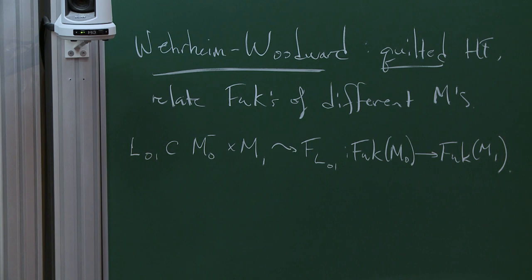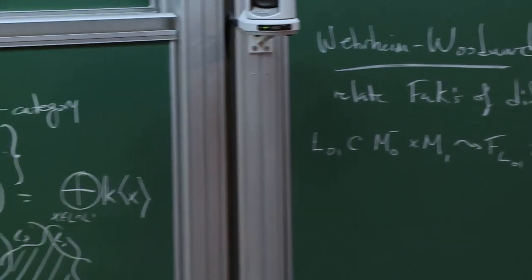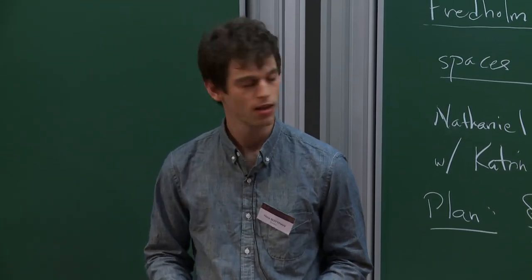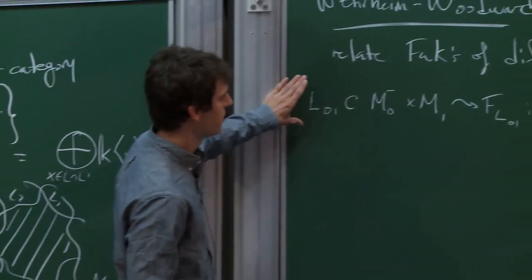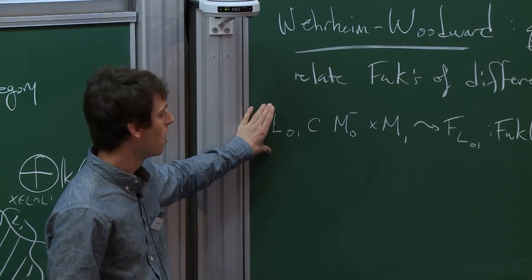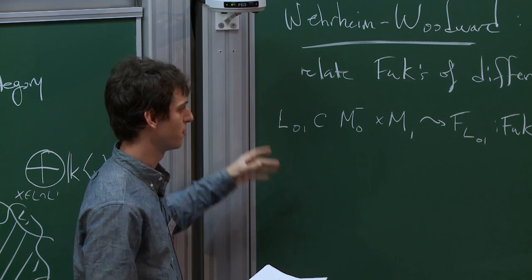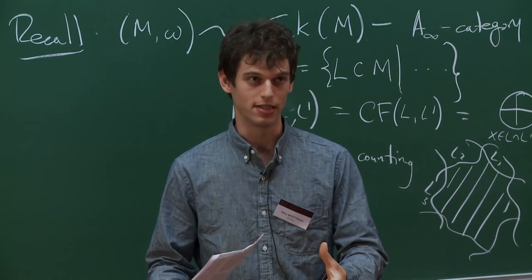An audience member asks: for the Floer chain complex for the morphisms, what's the difference between CF(L, L') and CF(L', L)? The answer is they're closely related; in good circumstances there's a duality between them. It turned out to be really non-trivial to carry out the goal of defining these functors. On the object level it's not too hard, but on the morphism level you're counting pseudo-holomorphic objects with singularities — the subject of today's talk.